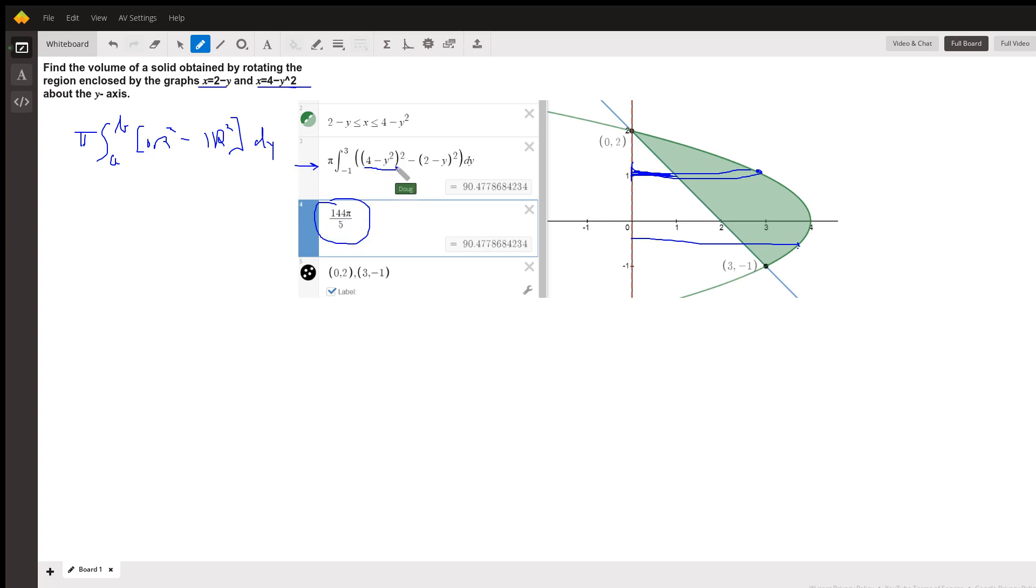Evaluating means we've got to square this binomial, minus square this binomial, evaluate from negative 1 to 3, and then multiply it by π. So I'll just get you started here. Let's just focus on this part right here. 4 minus y squared, the quantity squared is 16, minus 8y squared, plus y to the 4th. And we're going to subtract from that what we get when we square this binomial, which is 4 minus 4y, plus y squared.